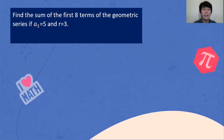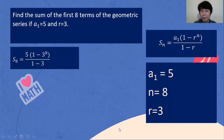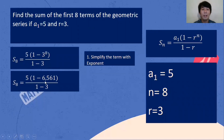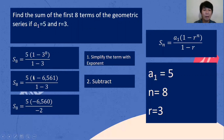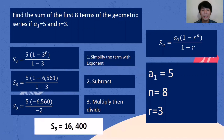Find the sum of the first 8 terms of the geometric sequence if a sub 1 is 5 and r is 3. Given: a sub 1 is 5, n is 8, r is 3. First process: simplify the term with exponent — 3 raised to 8 is 6,561. Subtract: 1 minus 6,561 is negative 6,560; 1 minus 3 is negative 2. Multiply then divide: 5 times negative 6,560 divided by negative 2 is 16,400. That's the process on how to get the sum of the geometric sequence.